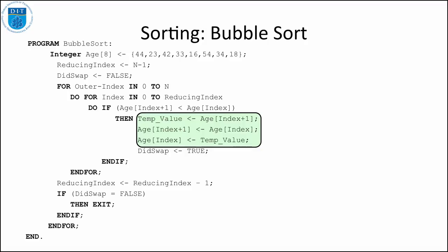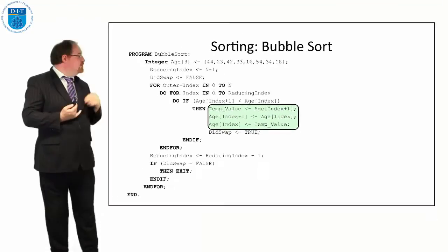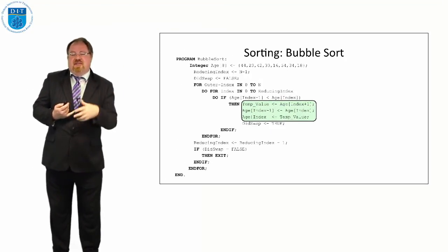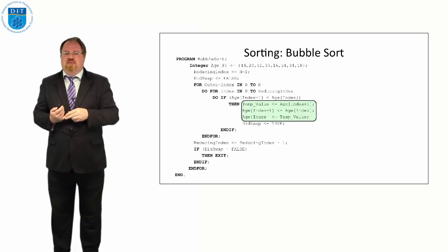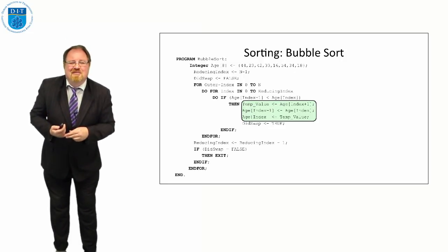So that's three things to consider: adding in a reducing index, putting in a Boolean to check if we did a swap, and then creating a module for swapping. That's some of the hundreds of ways we can optimize bubble sort, but that's a few ways that we can do it. So we'll see you on the next episode. Thanks very much.